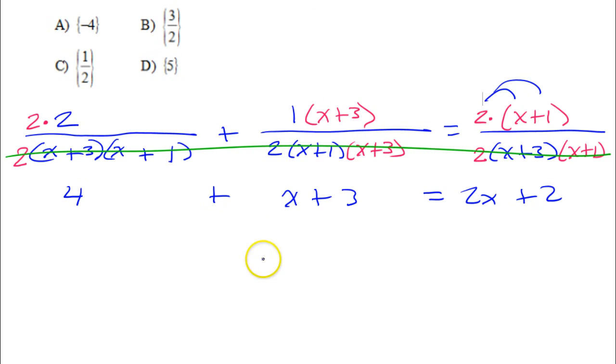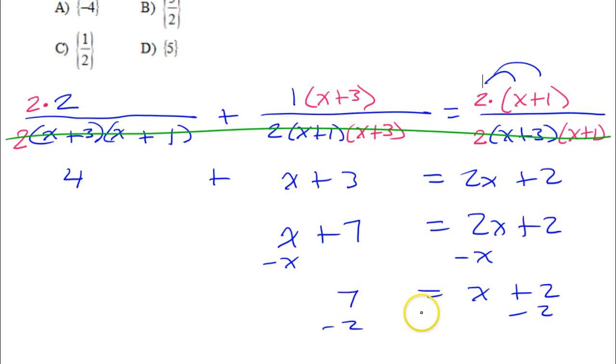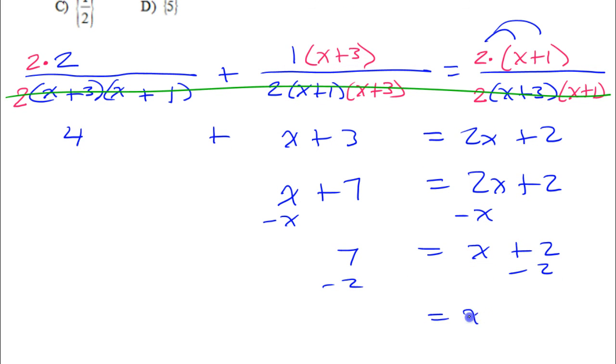So combining like terms. I've got my x, but I've got my 4 and my 3, so that's plus 7 is equal to 2x plus 2. Subtracting x from both sides gives me 7 is equal to x plus 2. Subtracting 2 from both sides gives me x is equal to 5.